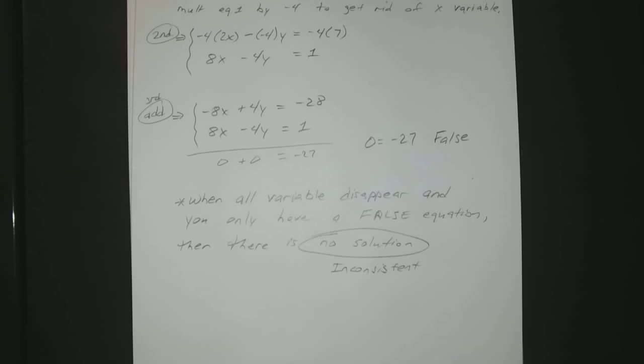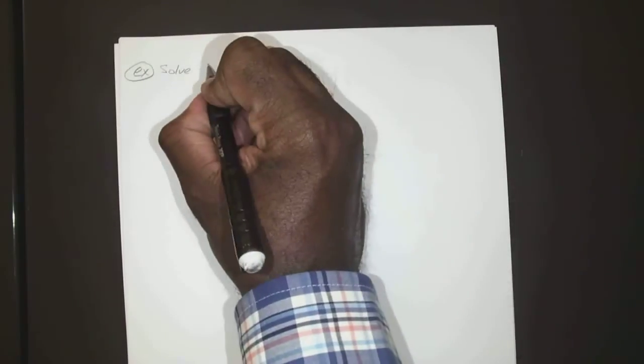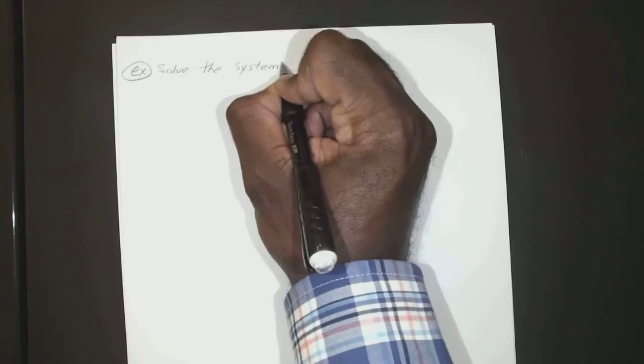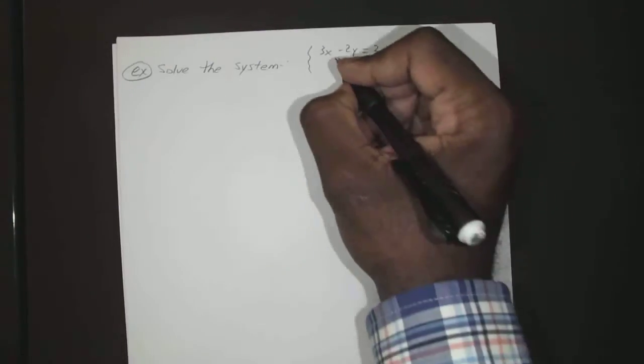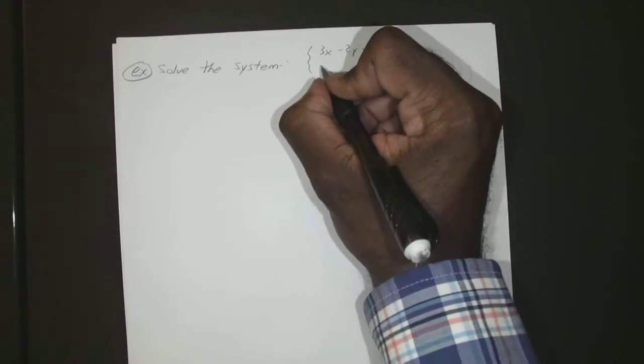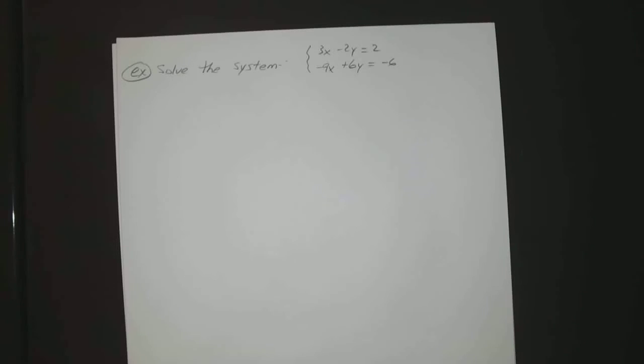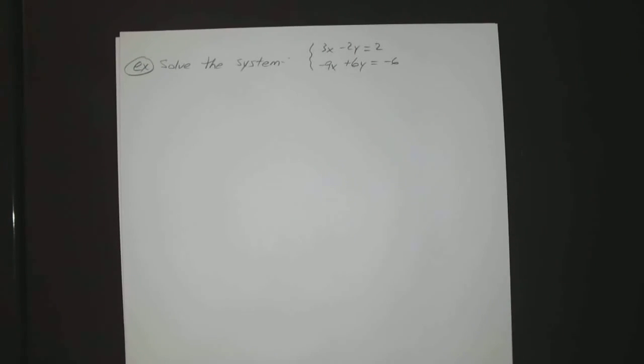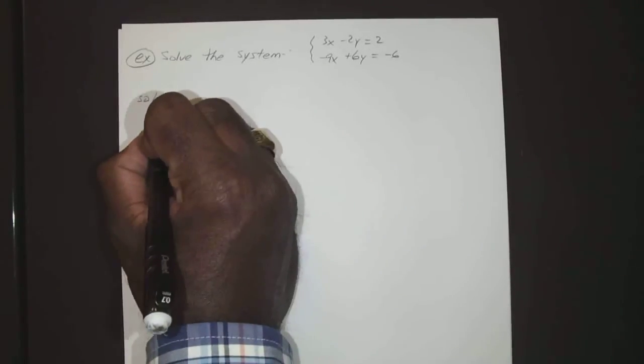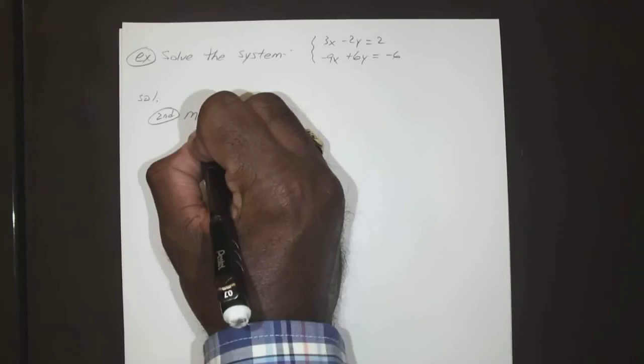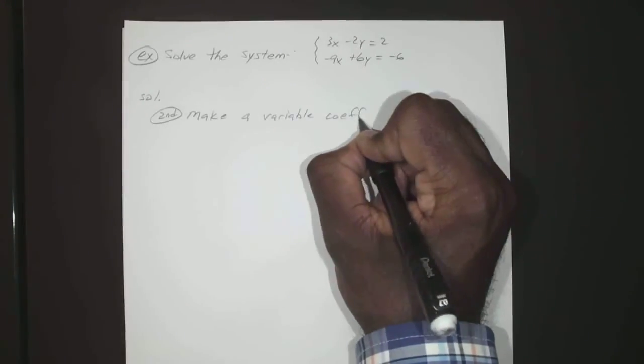Okay, it looks like everyone's done writing. Okay, so let's say for example if you wanted to solve 3x - 2y = 2 and -9x + 6y = -6. It's already in standard form, all the variables are already on the left-hand side, so we go right to step 2. So we'll make a variable coefficient opposites.